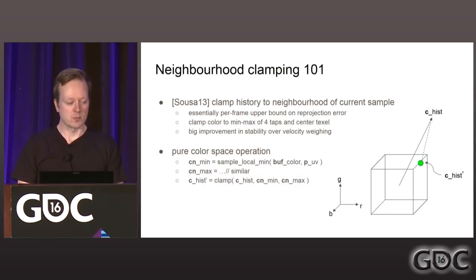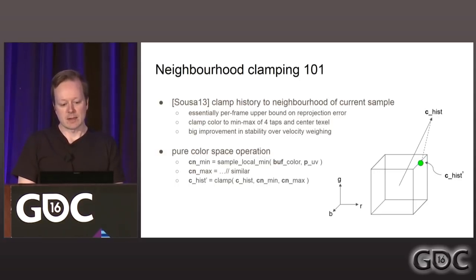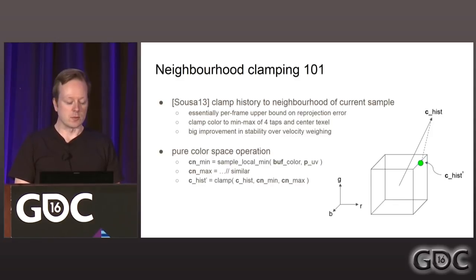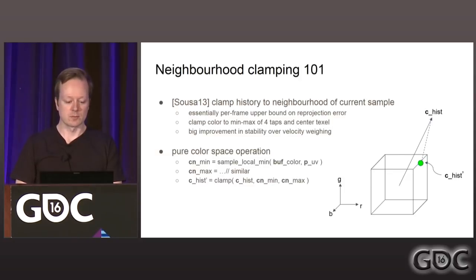To recap: neighborhood clamping is a pure color-space operation. You expand a local color space around the current fragment from the raw rasterization, then take your history sample and clamp it into that space. What Sousa described was using four taps and the central texel, then clamping the history sample to the local color space enveloped by those samples. Quick tests showed this gave a big improvement in stability for velocity weighting. You don't have to use RGB — you can do the clamping in a different color space if you want to rotate it relative to RGB.